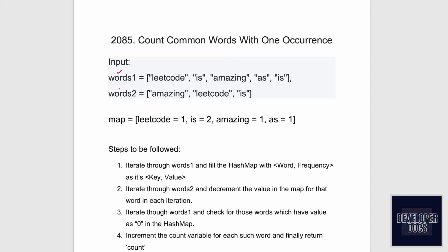Let's take a look at this example. In words one and words two, 'leetcode' occurs once, 'is' appears twice, 'amazing' appears once, and 'as' appears once. To start off with the logic, let us iterate through words one and fill a hashmap. The hashmap for words one will contain 'leetcode', 'is', 'amazing', and 'as' as keys with their respective frequencies.